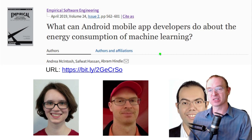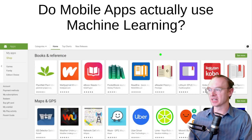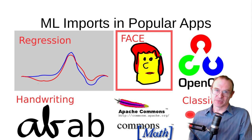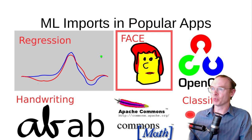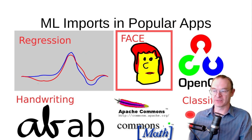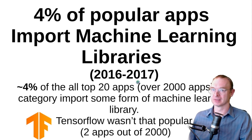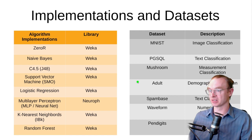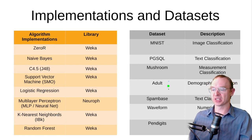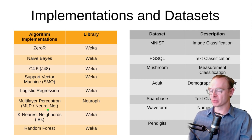I'll talk about some pieces of research I found interesting that my lab did. This study was about energy consumption of machine learning on Android devices — a little dated, from around 2016 and 2017. We looked at mobile apps in the App Store and found by decompiling them that they used a lot of linear regression, face detection, OpenCV, classifiers, Apache Commons Math, and handwriting detection. Google was just releasing downloadable models at the time, TensorFlow wasn't that common, and basically 4% of popular apps in 2017 used machine learning. We proposed taking a bunch of ML algorithm implementations and benchmark datasets to find which algorithms were optimal across datasets.